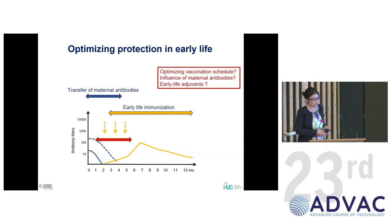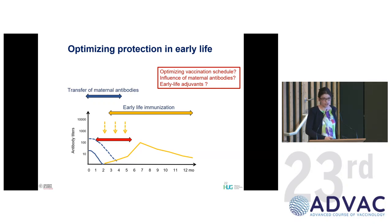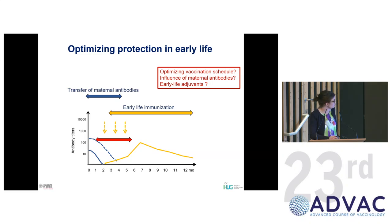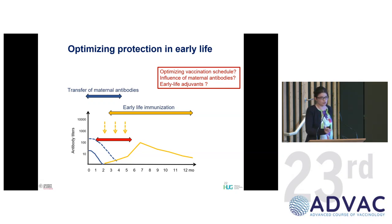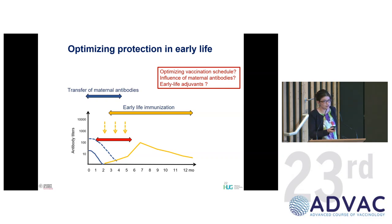For early life immunization, the questions we ask are: can we further optimize the vaccination schedule? What is the influence of maternal antibodies? I'll touch briefly on pertussis, because it's a really important vaccine. At the end, I'll show one slide about early life adjuvants that might in the future help us achieve better immune responses and perhaps fewer doses for early childhood vaccination — mostly mouse data.